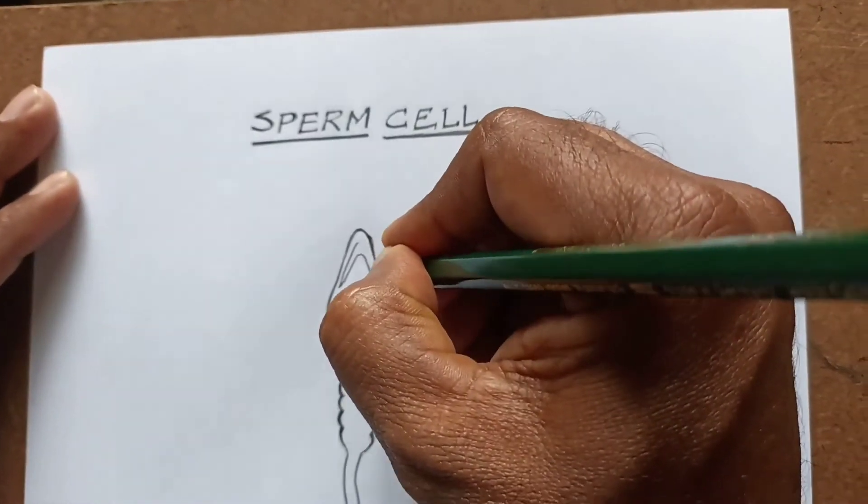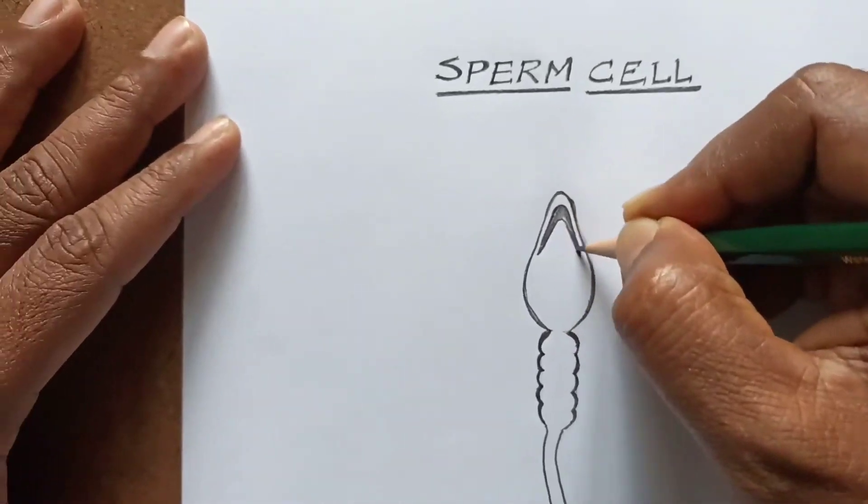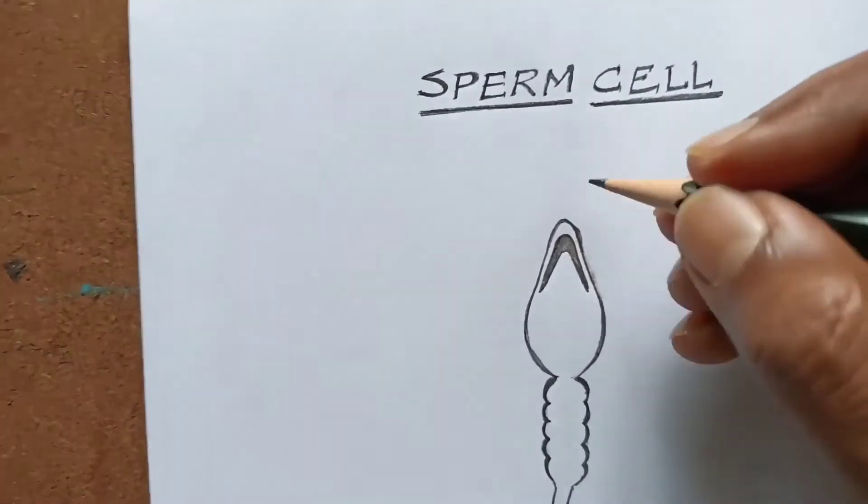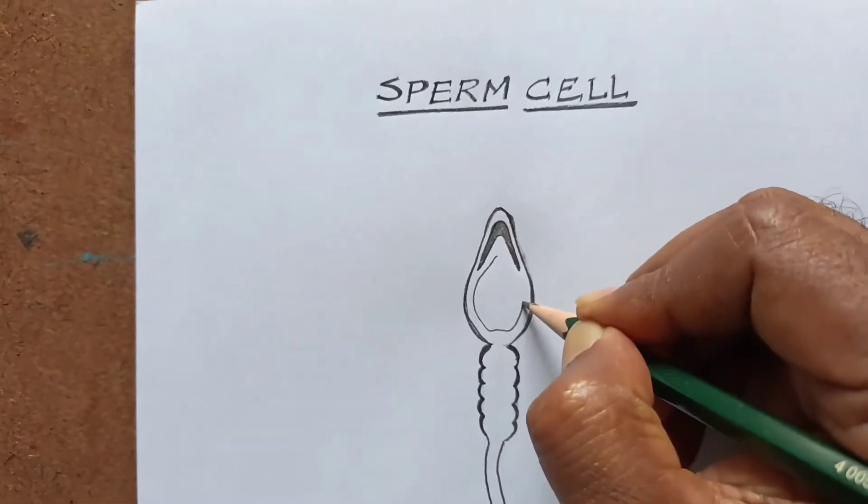Now I am drawing the acrosome, which helps the sperm to penetrate into the egg. This is the acrosome. This is the nucleus, the male nucleus. This nucleus fuses with the egg nucleus to form a zygote.